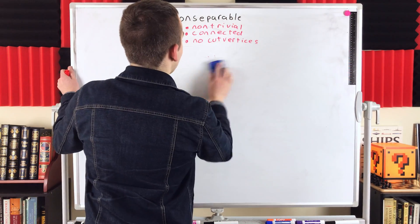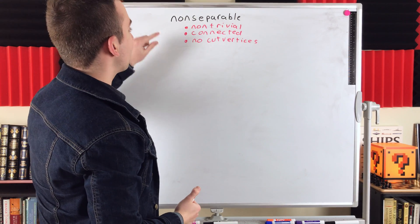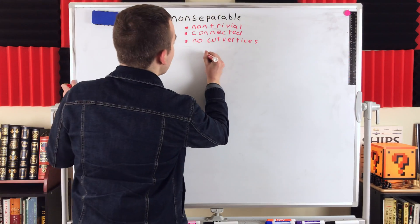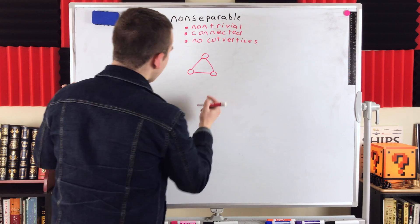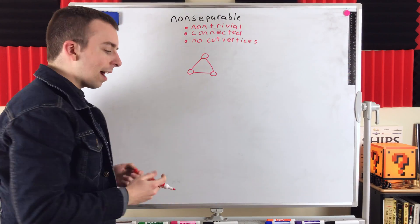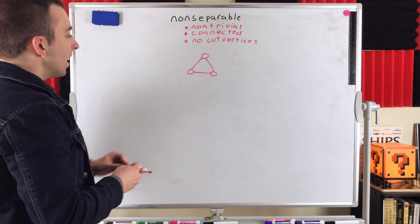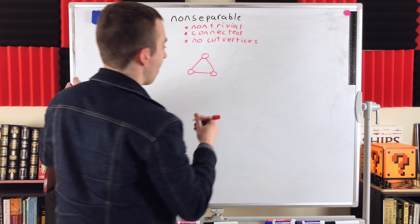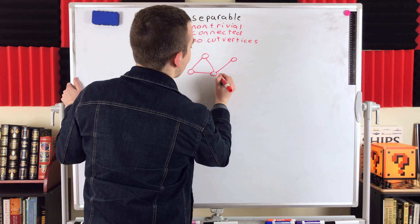In the non-separable graphs we've looked at so far, they were both cycle graphs. So any two vertices on these graphs lie on a common cycle. Now let's look at an example of a separable graph, and we'll come back to that remark about vertices being on a common cycle — it turns out that's pretty important.